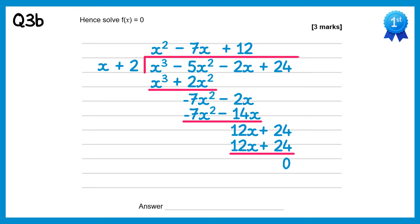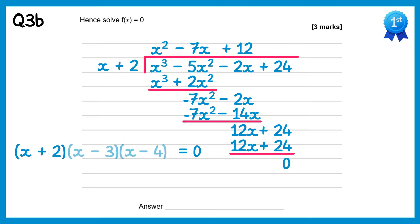So we can now factorise this. We have x plus 2 times by the quadratic, and remember it equals 0 because we're solving the equation. We can factorise the quadratic further to x minus 3, x minus 4. Now we can see our solutions: the first bracket gives us x equals negative 2, the second bracket x equals 3, and the final bracket x equals 4.